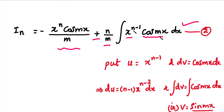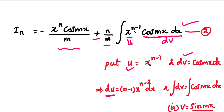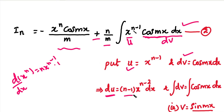We apply the integration by parts formula again to the remaining function. The integration function is expressed as u into dv. We arrange: u equals x power n minus 1, and we assume dv equals cos mx dx. We differentiate the first equation: du equals n minus 1 times x power n minus 2 dx, using d/dx of x power n equals n times x power n minus 1.